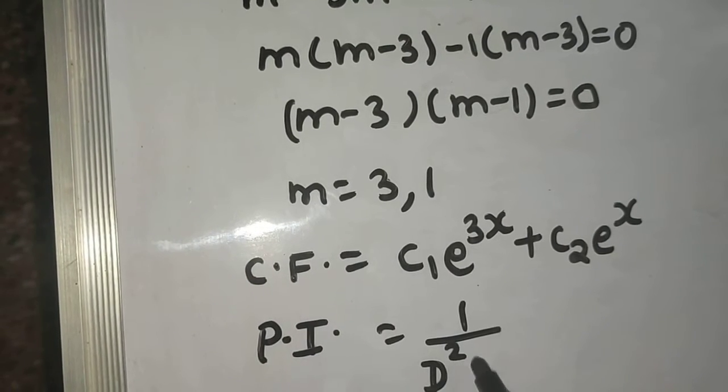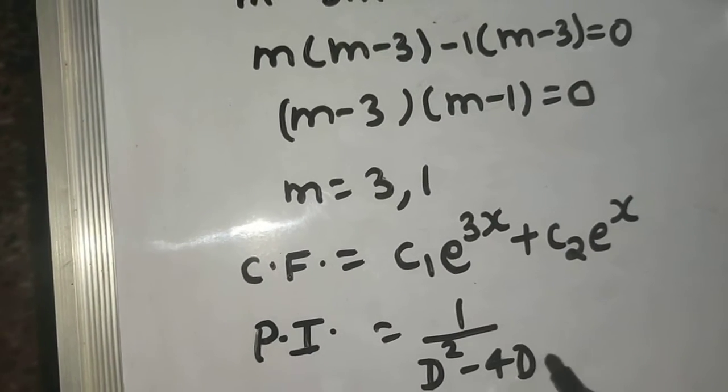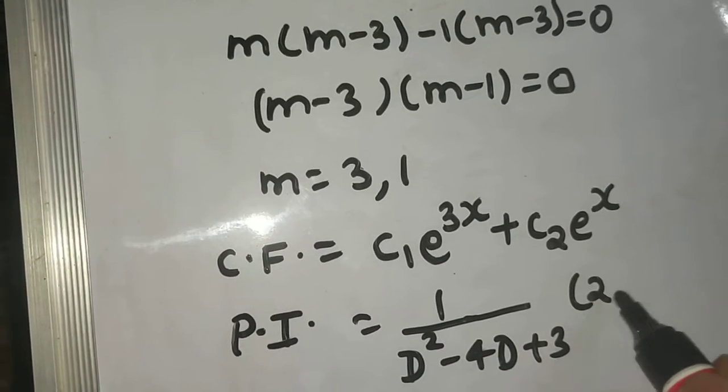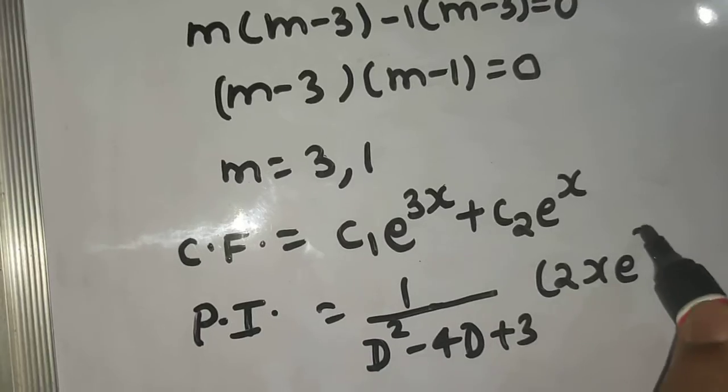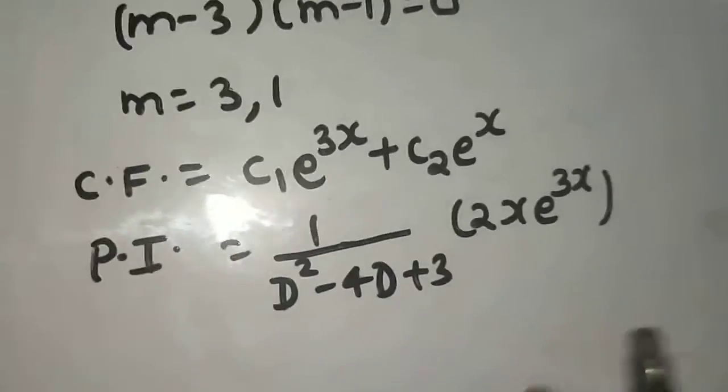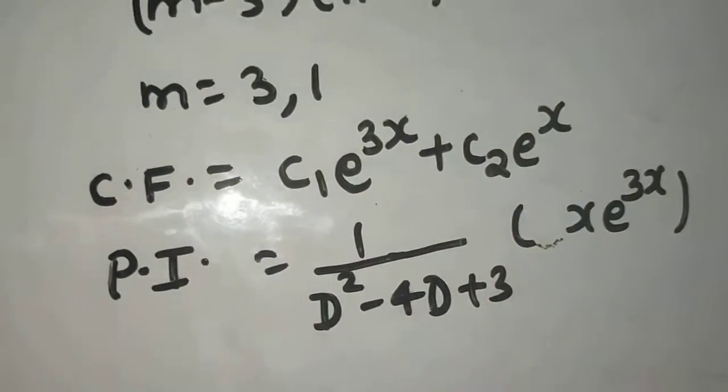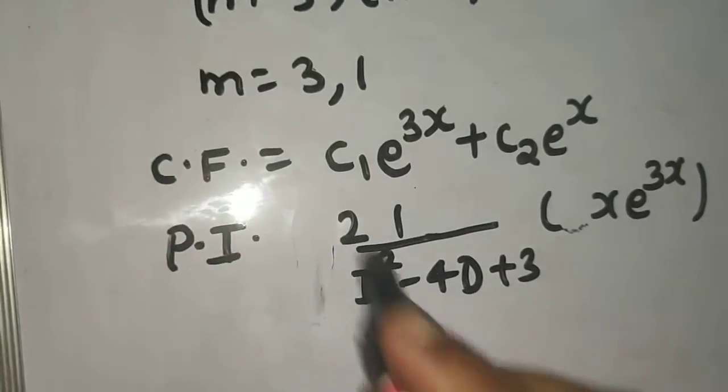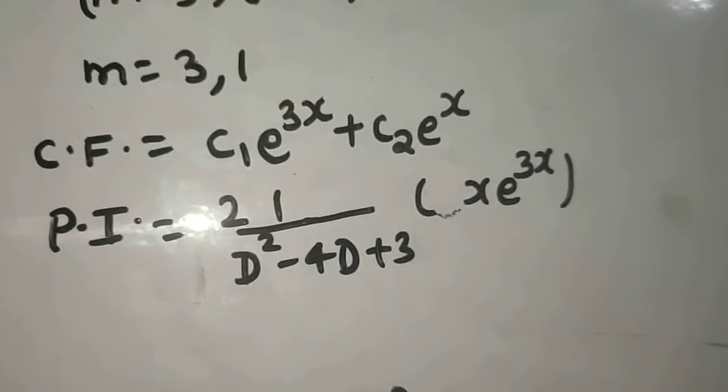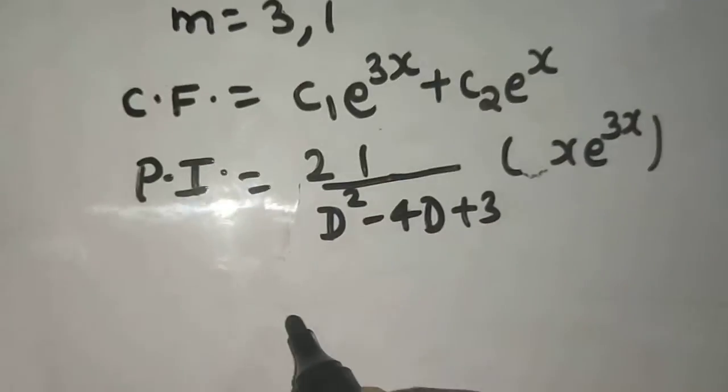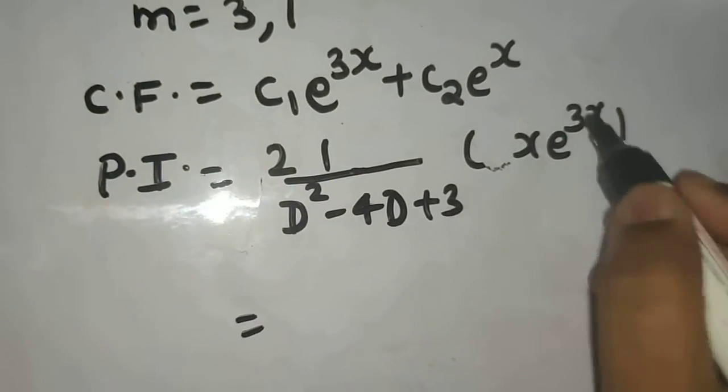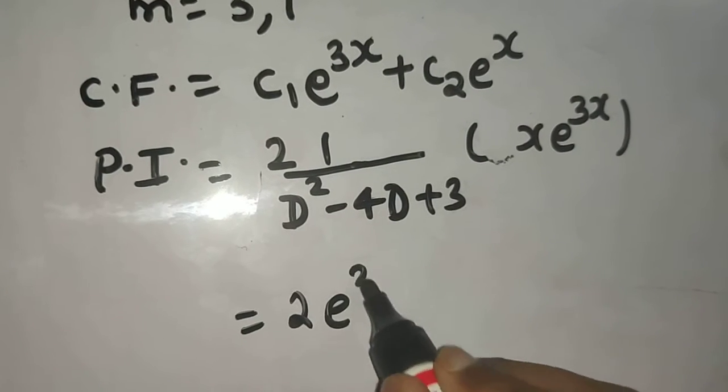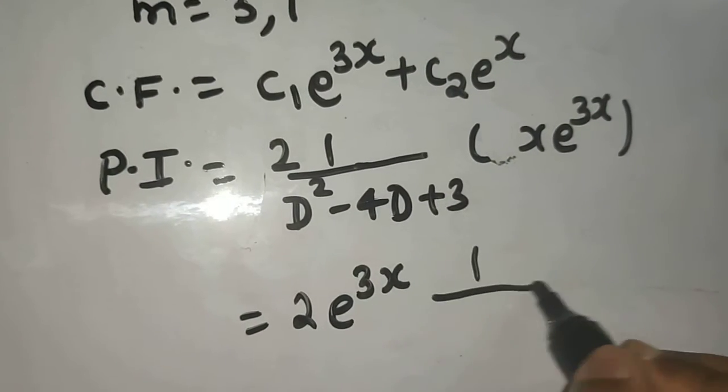Now proceeding with the particular integral, which is 1 upon f of d, which is d square minus 4d plus 3, and this will be operating on 2 times x e power 3x. First basic thing I will do is to take this 2 out of the operator. Second thing I will apply the rule which says take this e power 3x out.